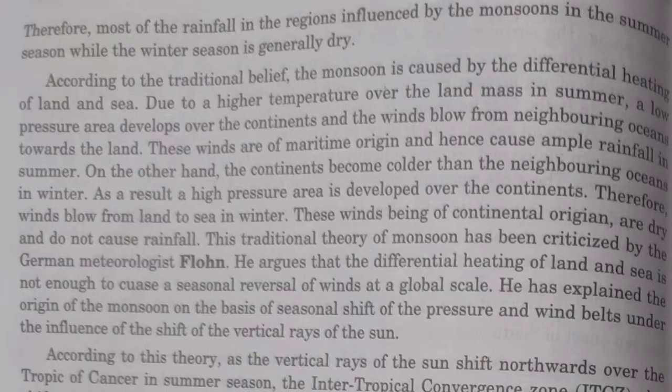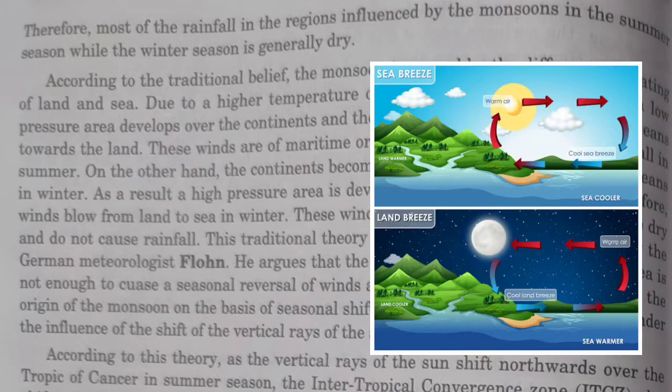Hello students. The topic I am going to discuss today is the mechanism of monsoon, or the theories related with the occurrence of monsoon. According to the traditional belief, monsoon is caused due to the differential heating of land and sea. It is very similar to the occurrence of land breeze and sea breeze.